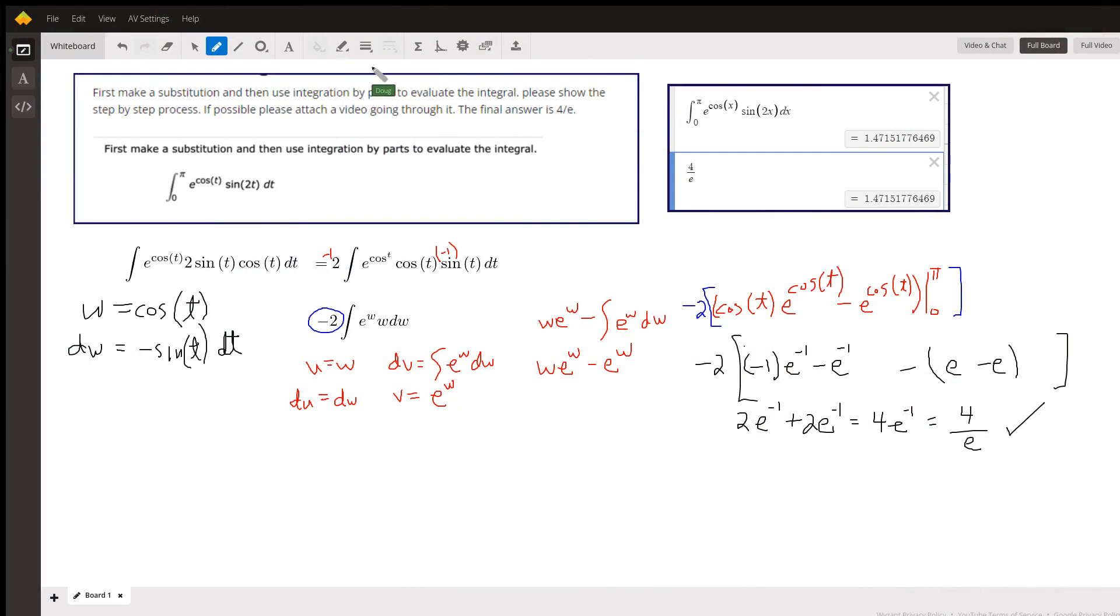Okay, here we go. Here's one way to do this. The key is to replace sine of 2t with 2 sine t cosine t. That's a trigonometric identity, so that's a substitution.